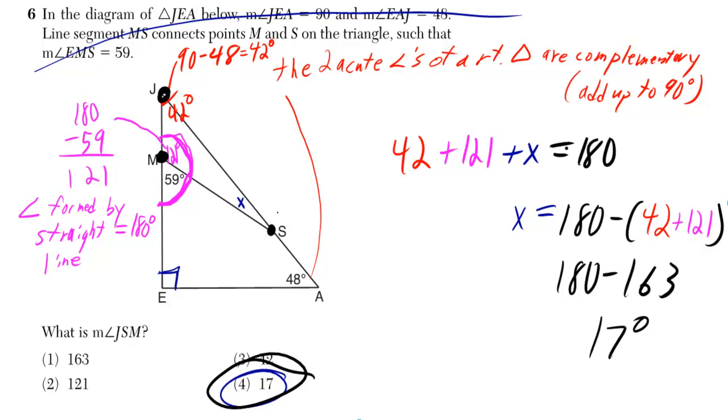Or you could just say it's going to be whatever I get when I subtract 42 plus 121 from 180. And that gives you 17.